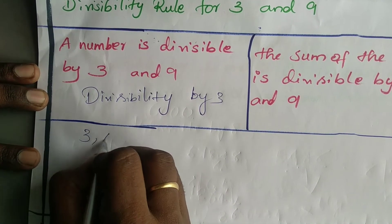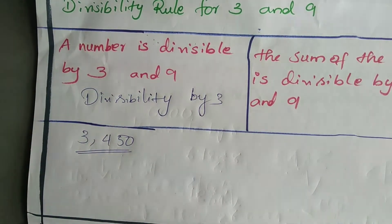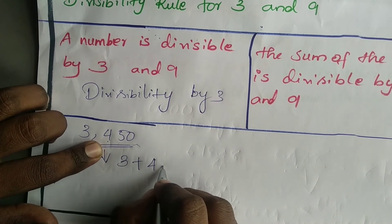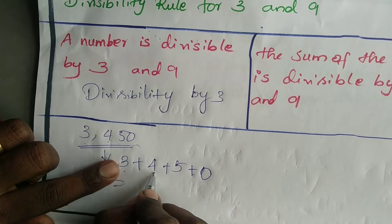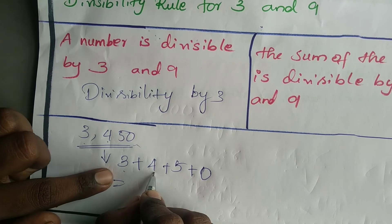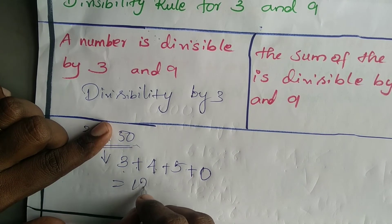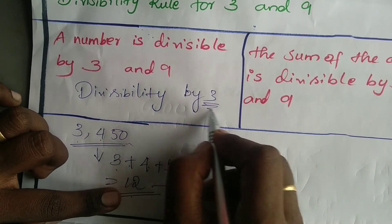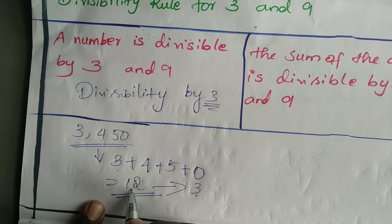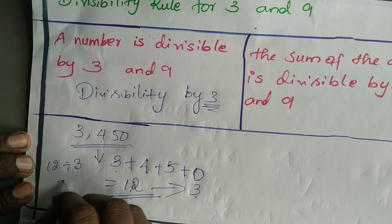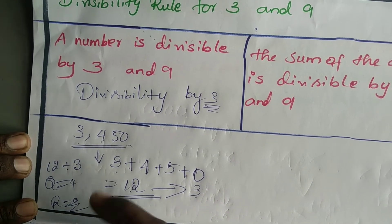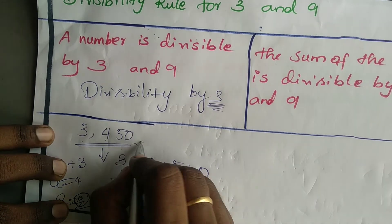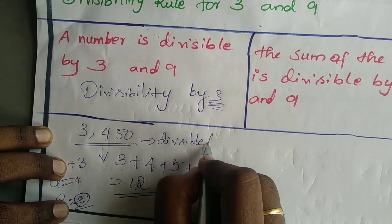For example: 3,450. To check divisibility by 3, find the sum of the digits: 3 + 4 + 5 + 0 = 12. Is 12 divisible by 3? Yes — 12 divided by 3 gives quotient 4 and remainder 0. So 3,450 is exactly divisible by 3.